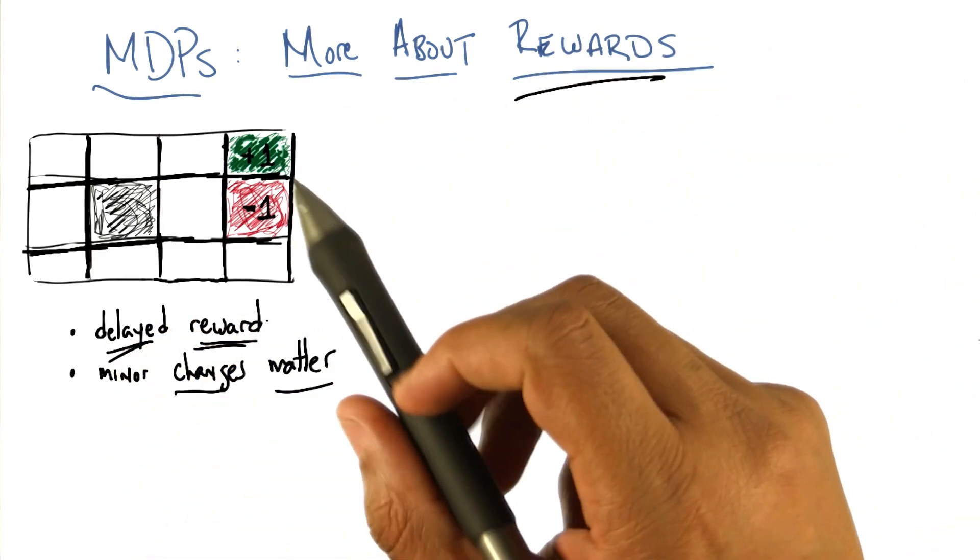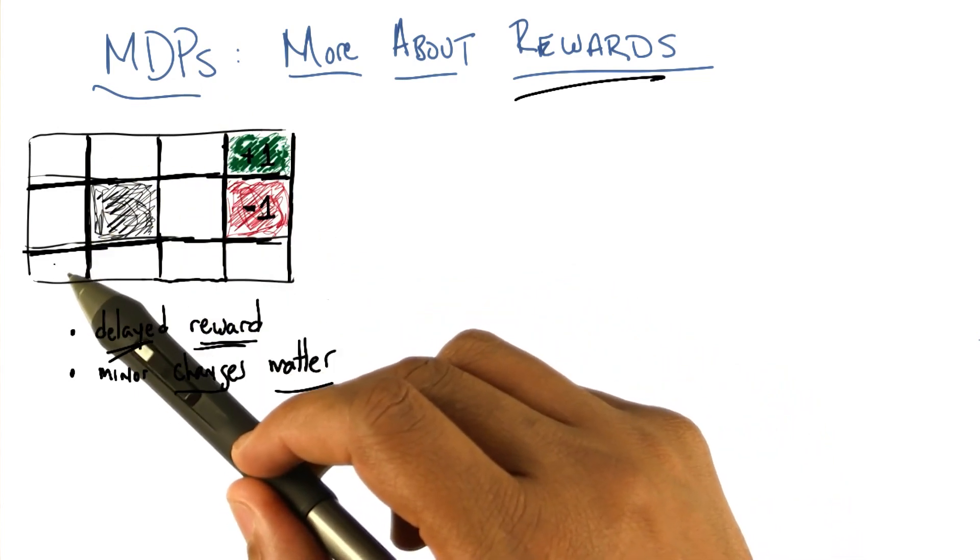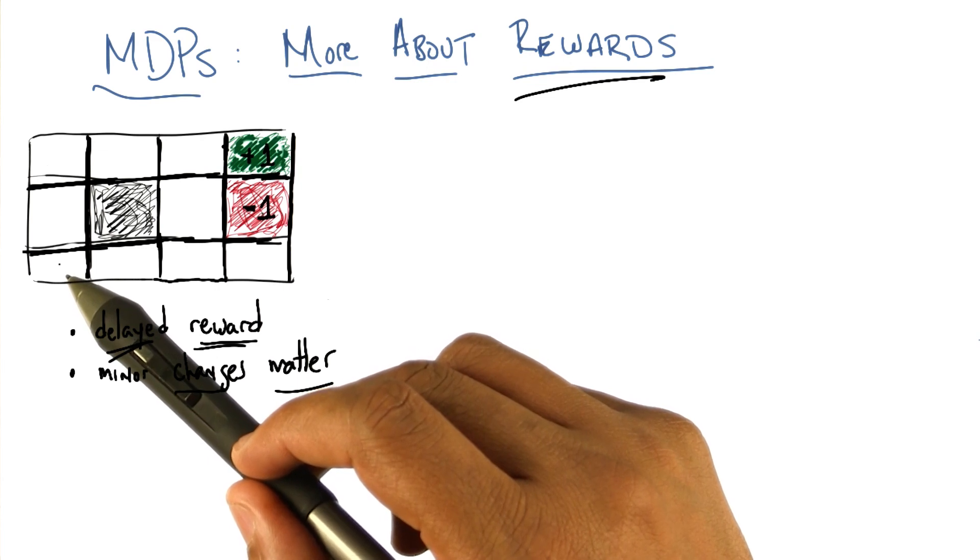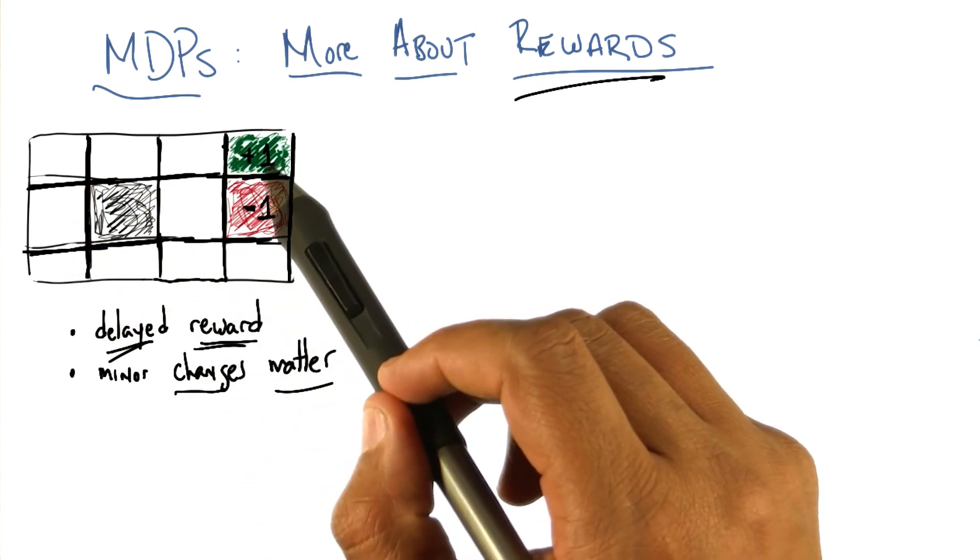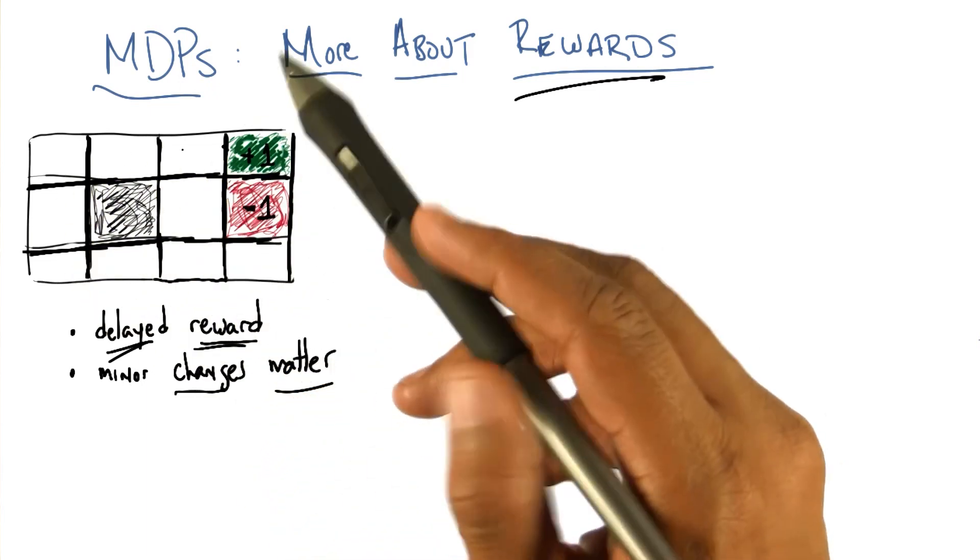Well, if you think about the way we've set up this kind of problem, like we have here where we're trying to start in this little bottom left hand square and wind our way up into this plus one, there's really this notion of sequences of actions.